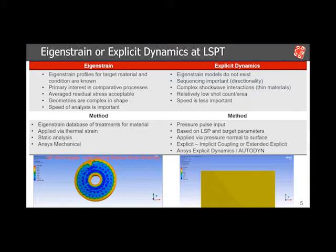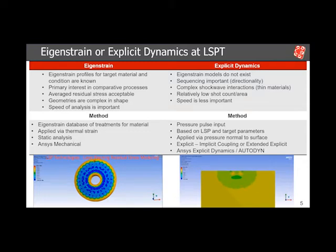Internally, we have a database of treatments for different combinations of laser peening parameters and the materials to which those treatments have been applied. We simulate that with thermal strain inside of ANSYS. As an example, there's an animation showing the progressive development of a residual stress field as we apply laser peening spots and walk around the circumference of a disk. When we don't have eigenstrain models available, or we're looking at new material processing or complex shockwave interactions, that's when we turn to explicit dynamics.